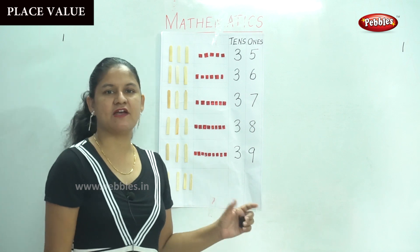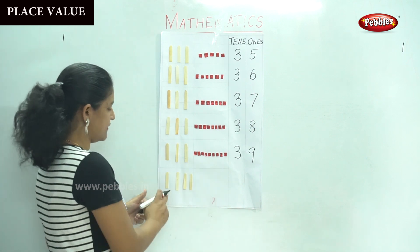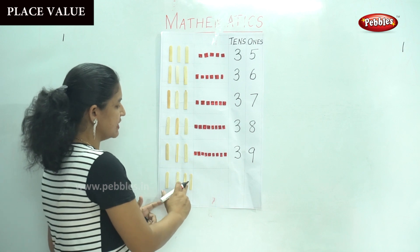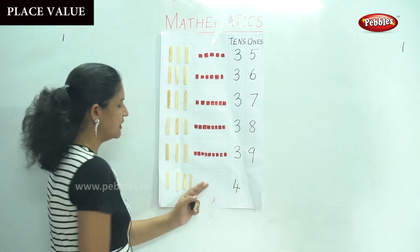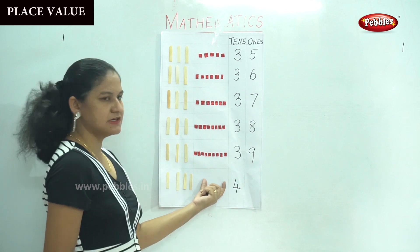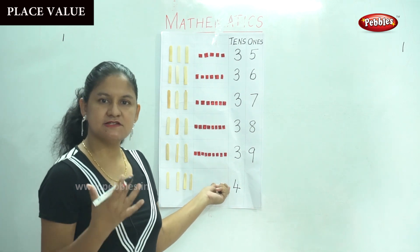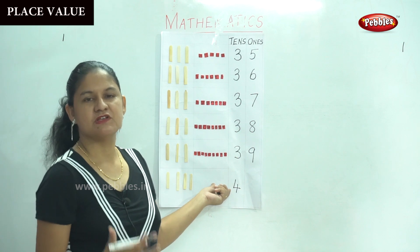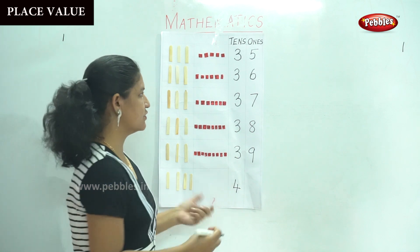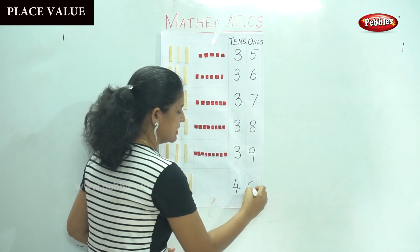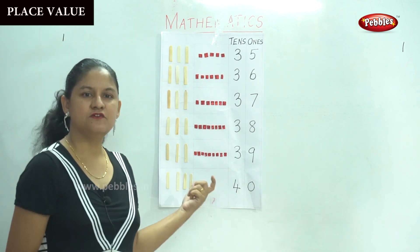So after thirty-nine we have the number forty. So in the tens place we have one, two, three, four — four tens. And in the ones place there is no number, so it is considered zero. Zero means absence of something, so in the ones place we write it as zero. So this gives us the number forty.